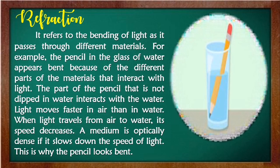What is refraction? It refers to the bending of light as it passes through different materials. For example, the pencil in the glass of water appears bent because of the different parts of the materials that interact with light. Just look at the picture — the pencil in the glass of water appears bent.